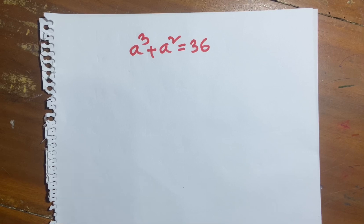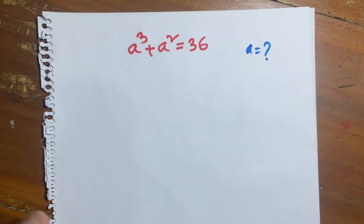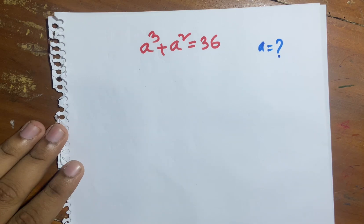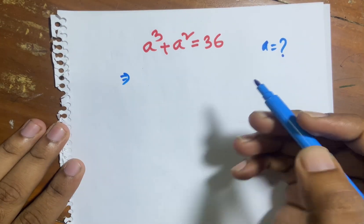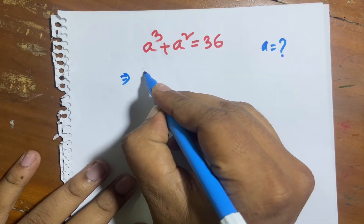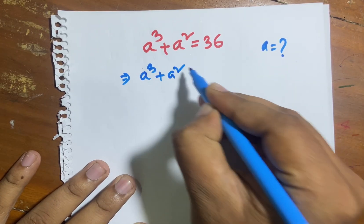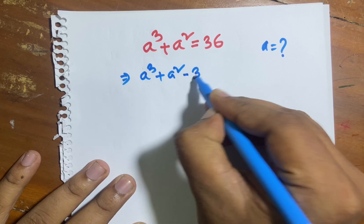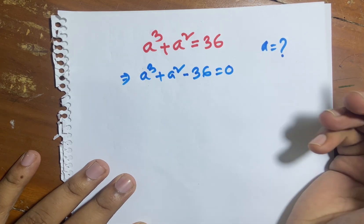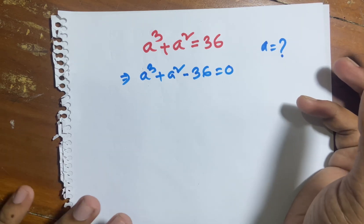Hello everyone, today I solve this equation: what is the value of a? It is a math olympiad problem. Now a^q plus a squared minus 36 equals 0. I subtract 36 from both sides.